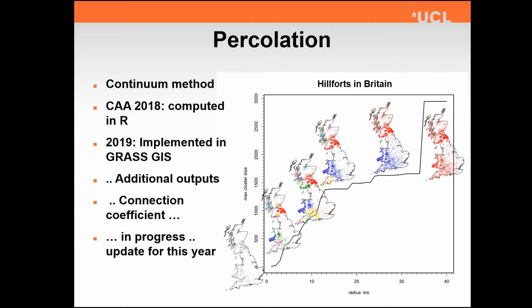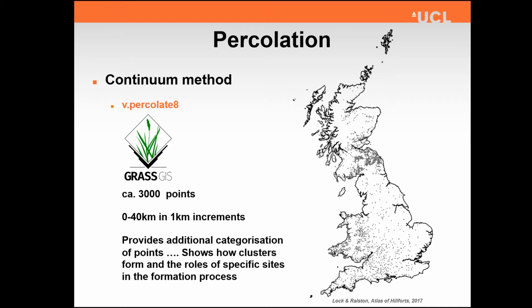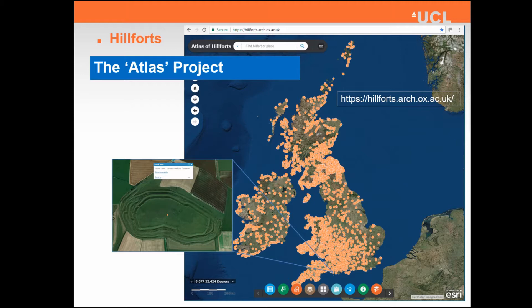This is very much a progress report — an update, a work in progress. Looking at the GrassGIS solution and the case study I'll present in a moment, there are about 3,000 data points spread over the British Isles. We're stepping through the percolation radius — that is the threshold distance between points — of between 0 and 40 kilometres in 1 kilometre increments. And that additional information is going to show us how those clusters form. The data I'm using is the Atlas of Hillforts project, which Gary Glock has been a key mover and driver for — a fantastic data set.